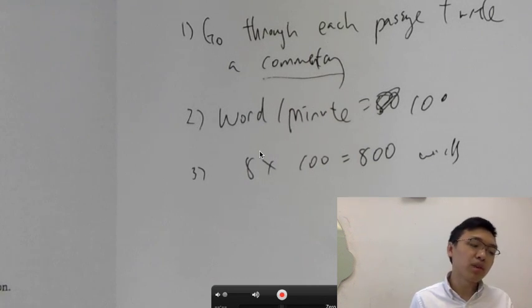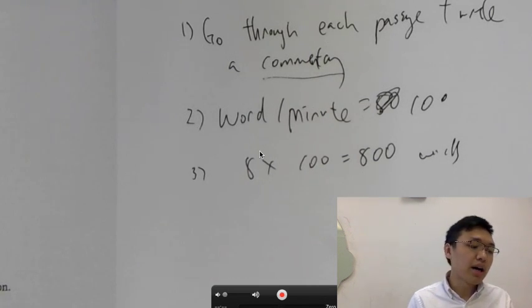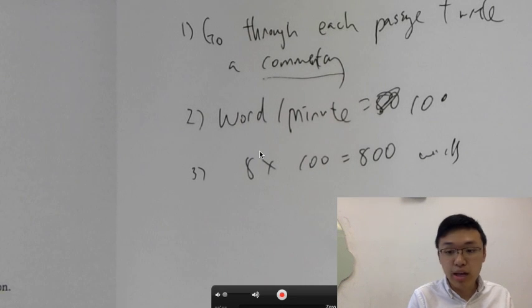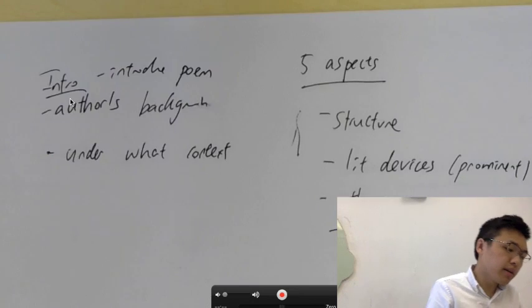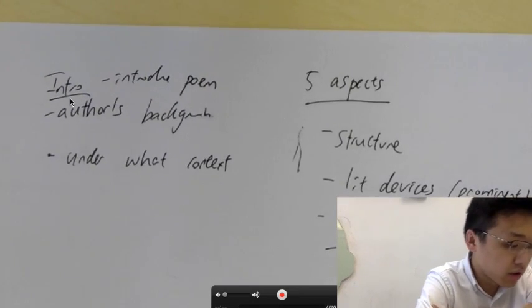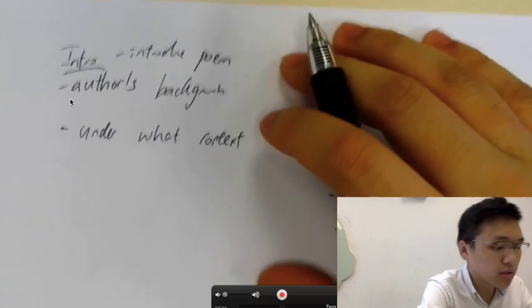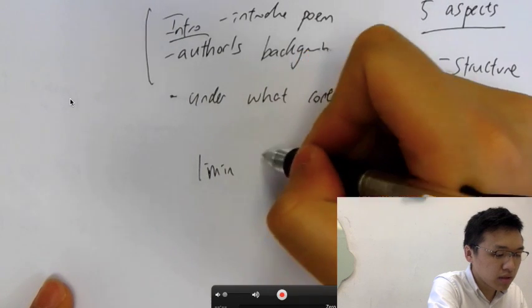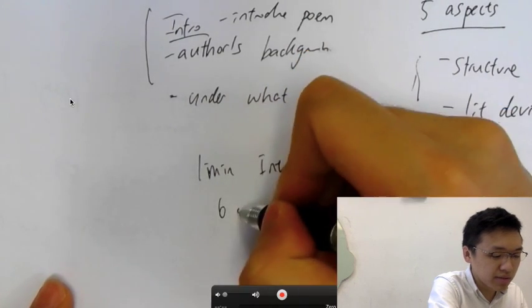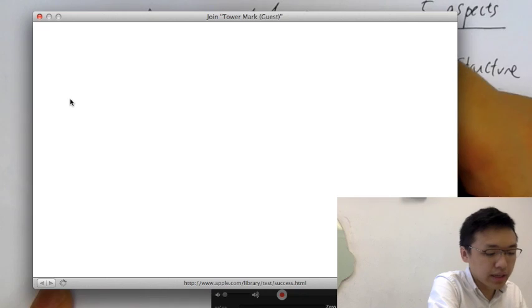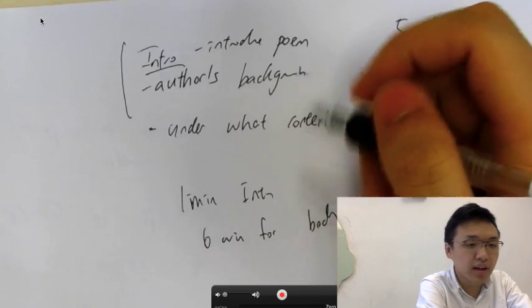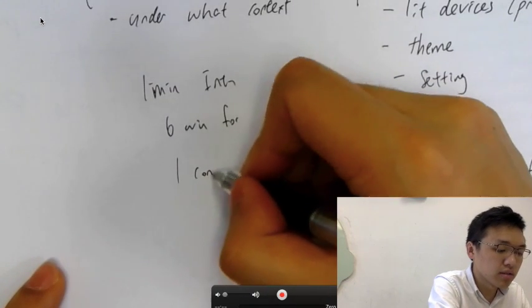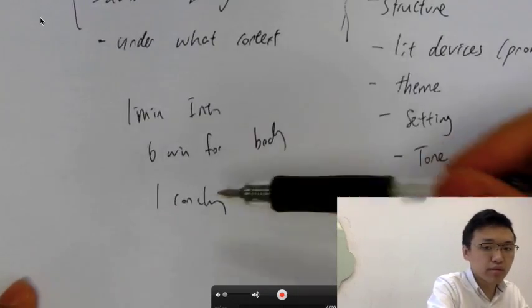But now you're probably asking, how do I write a good commentary that would translate into a good IOC? Now let's get straight to the point. For your introduction, for the IOC, it's 8 minutes. Normally, you will have 1 minute for your introduction, and then 6 minutes for your body, and the final minute will be a conclusion.